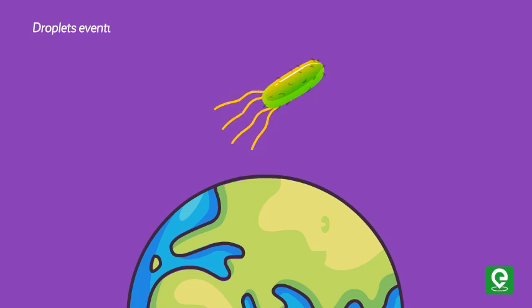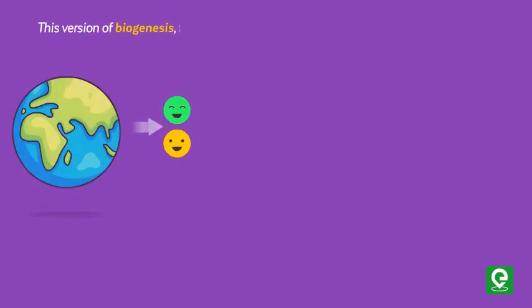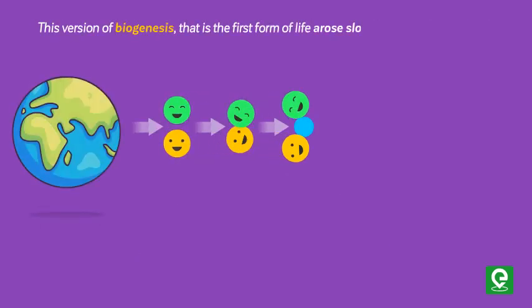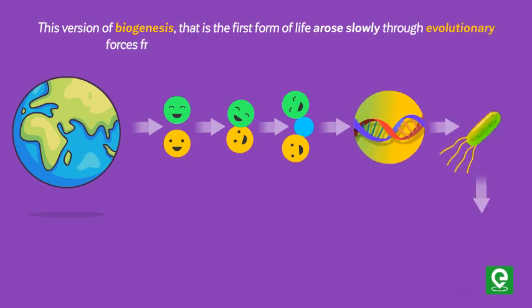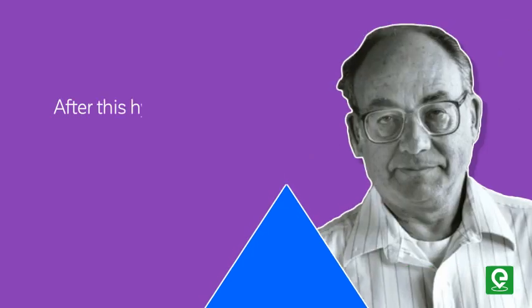These droplets eventually formed the true prokaryotic cell, which further formed eukaryotic cells. This version of biogenesis — that the first form of life arose slowly through evolutionary forces from non-living molecules — is accepted by the majority.